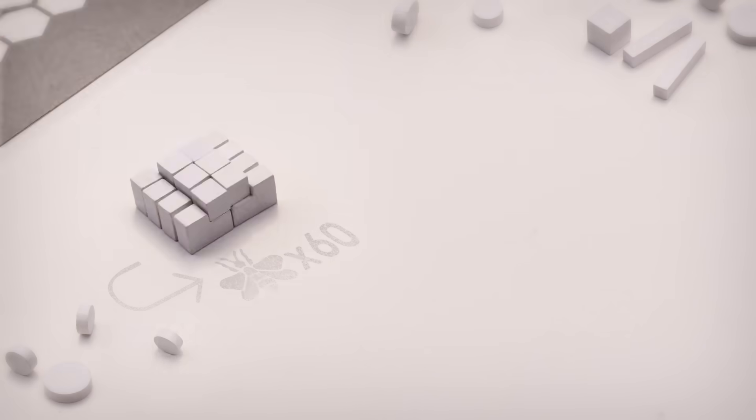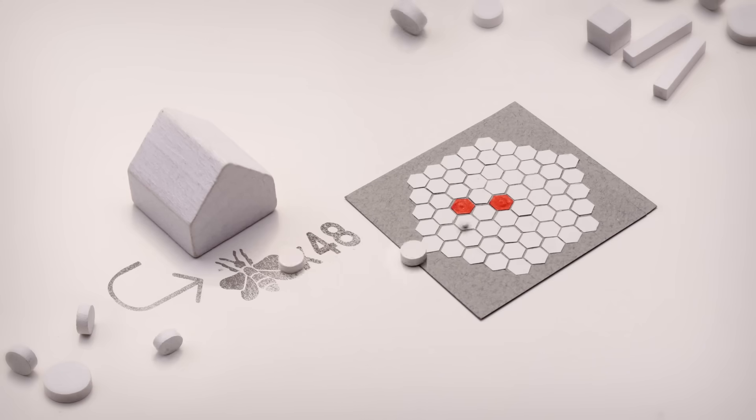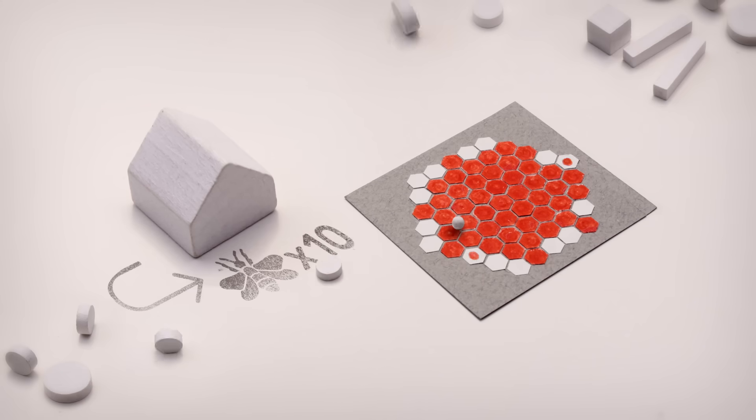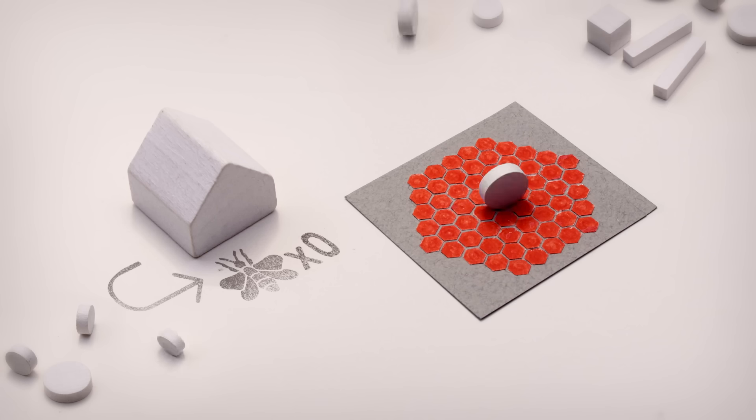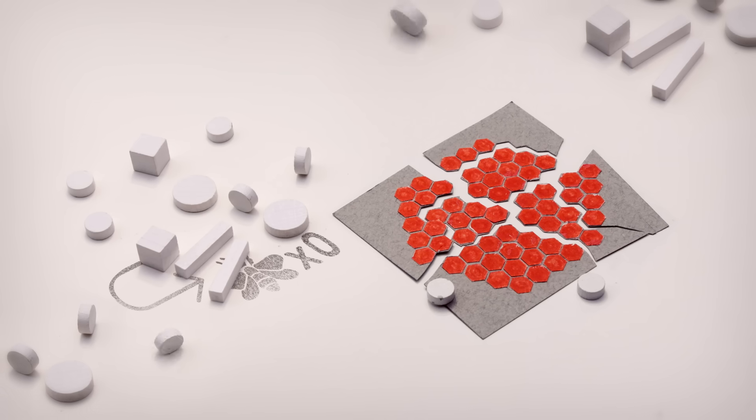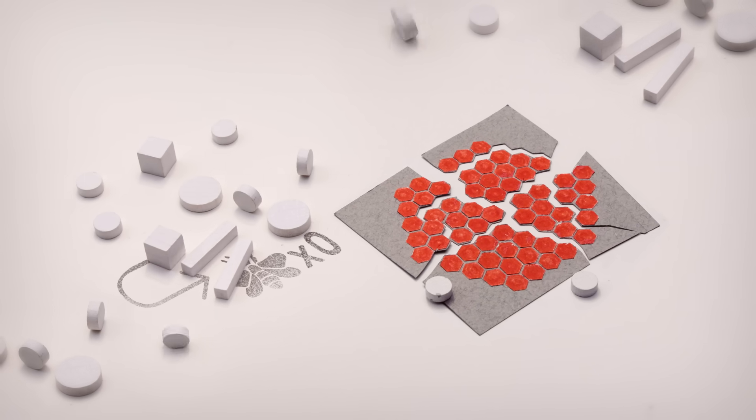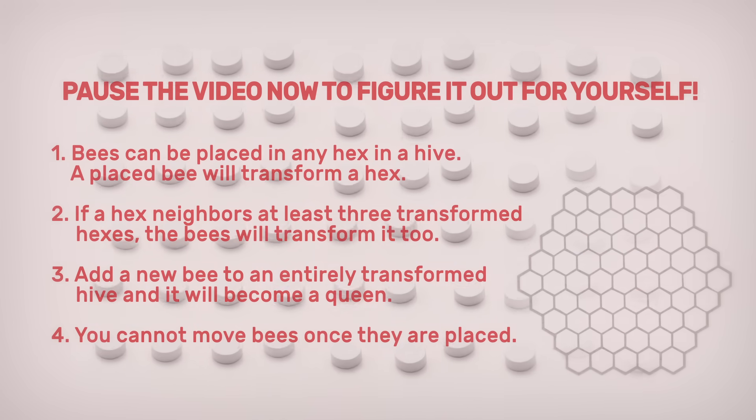You could put 59 bees in one wire hive, wait till they transform all the hexes, and then create a queen. But then just one collapse would end the species. The more viable hives you can make now, the better. So how many can you make with 60 bees?